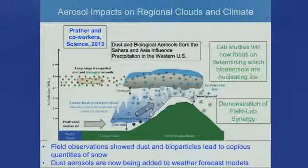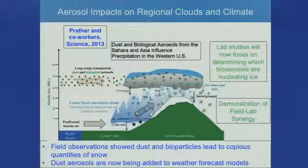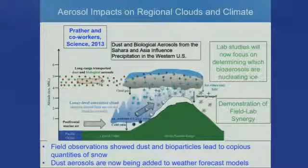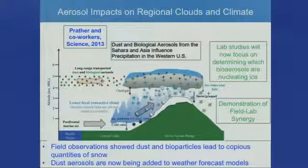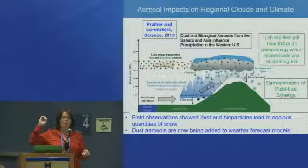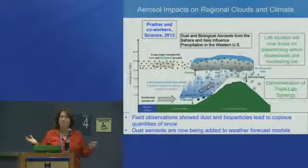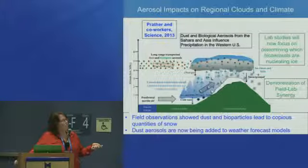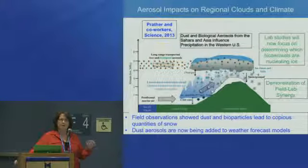One of the things when you think about climate is also regional climate. This is work we published last year in Science where we went out — I do field studies — and this sets the stage for why we're now taking a center approach. This is the Sierra Nevadas in California where we store all of our snow. We fly through clouds, and with our instruments we can measure the chemistry of every cloud droplet and every ice crystal one by one. We can link it back to the source. Our big question is: what seeds clouds?